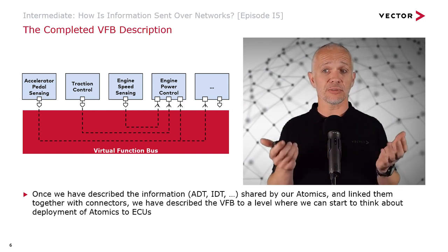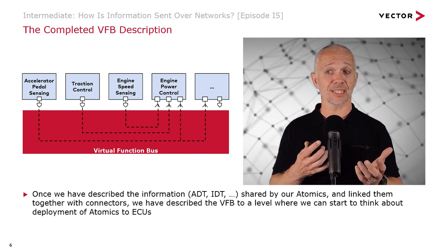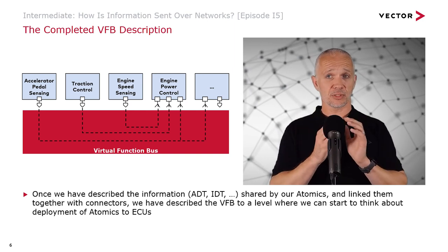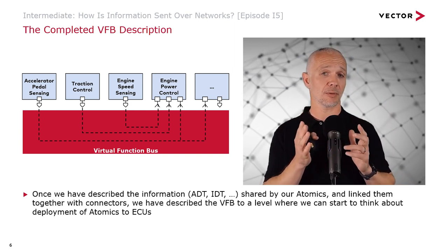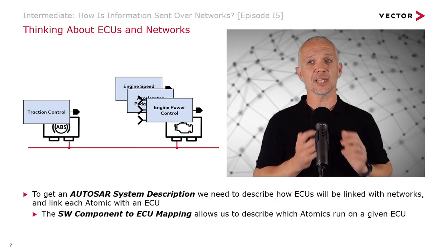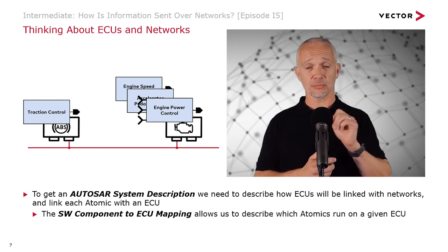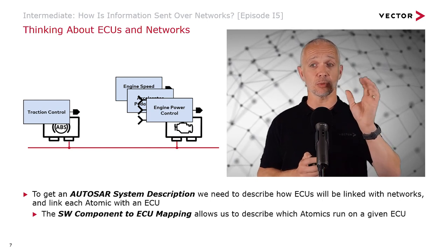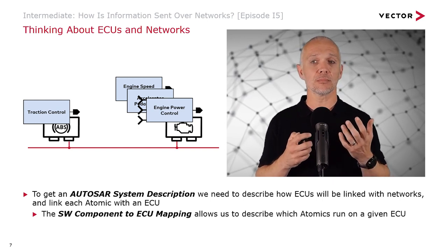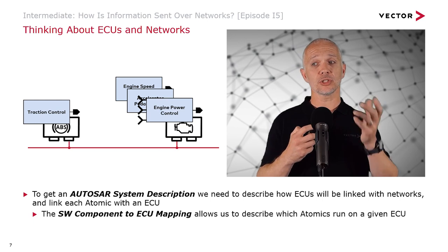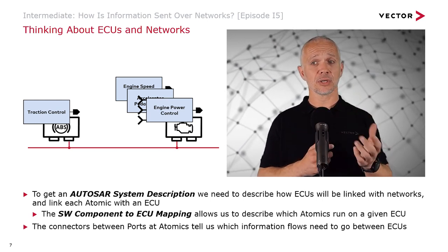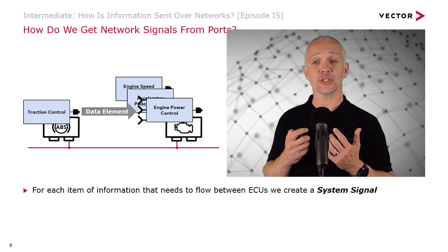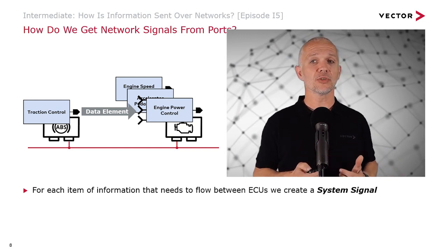We have a completed virtual function bus description once we've described the information in terms of ADTs and IDTs shared by our atomics, and we've linked the ports on the atomics together with connectors. This means we've described the virtual function bus to a level where we can start to think about deployment of atomics to ECUs. To get an AUTOSAR system description, we need to describe how ECUs will be linked with networks, and link each atomic with an ECU. For each item of information that needs to flow between ECUs, we create a system signal.